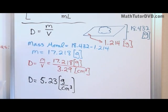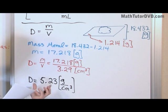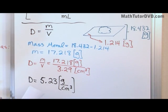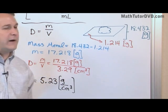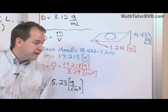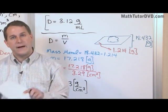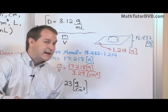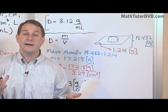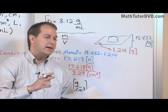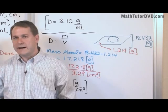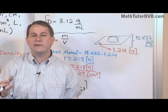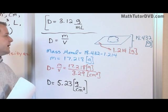This means that this particular sample of metal — whether it's aluminum, gold, silver, or whatever it is — every time I take a cubic centimeter of that material, I should have a mass of 5.23 grams. If I have a truck full of the stuff and I shovel out one cubic centimeter, I should have a mass of 5.23 grams every time, because density is an intrinsic property of the substance that applies to every part of it.